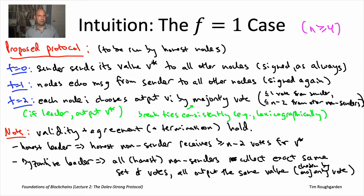This is a nice result — we have a pretty simple, intuitive protocol that, with at most one Byzantine node, satisfies both validity and agreement. But equally instructive is to see why this protocol does not work — is not correct — when f equals two, with the possibility of two Byzantine nodes, in particular the possibility of collusion between a Byzantine sender and a Byzantine non-sender. Let's see that counterexample in detail.